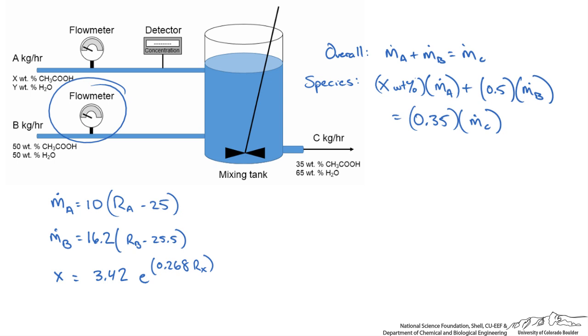Now we have our two material balances and our three instrument equations. The goal is to get a final equation that is the reading on flow meter B as a function of the reading on flow meter A and the reading on the detector for A.